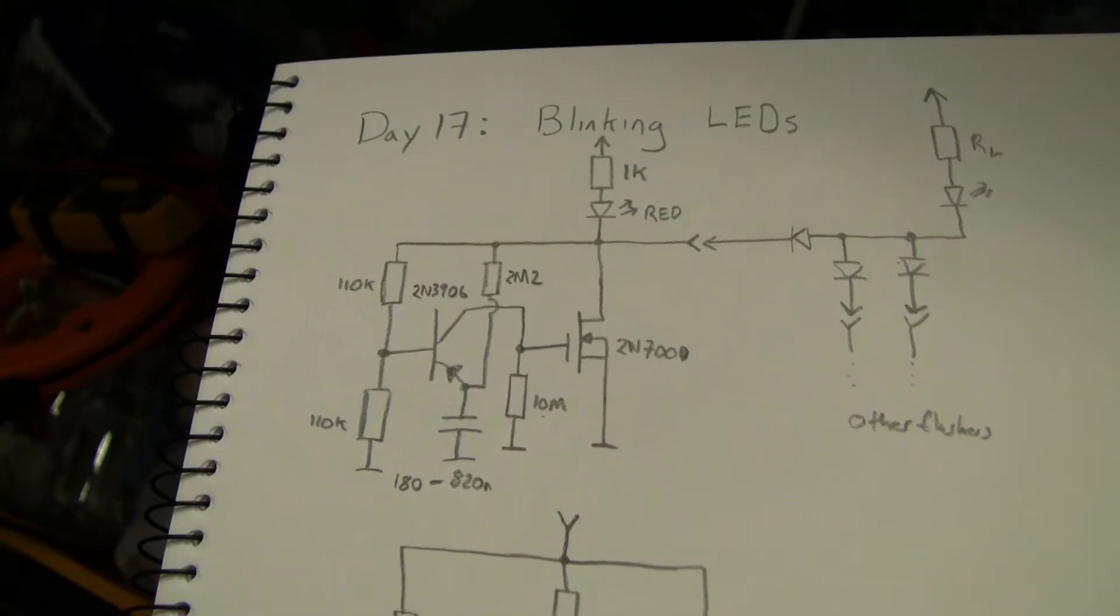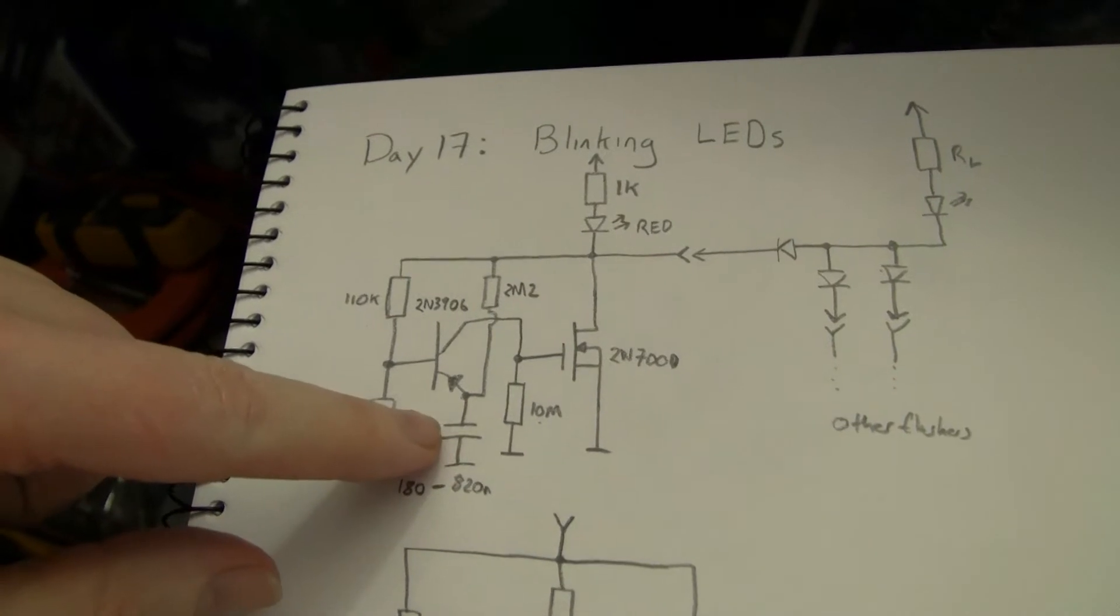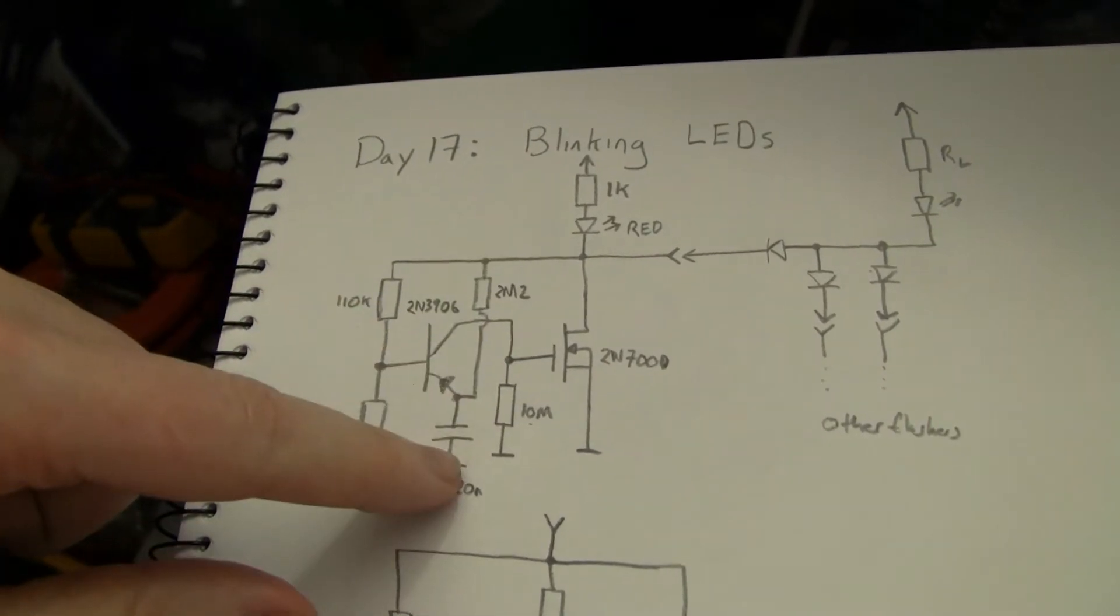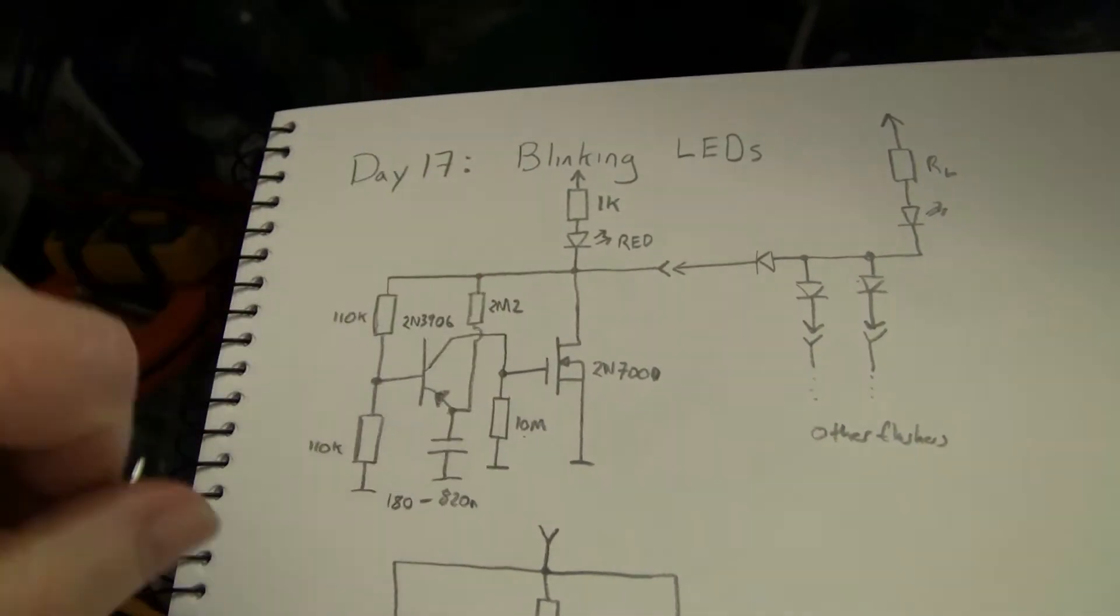Some extra things I forgot to talk about. To vary the flashing frequency to taste, you can obviously change the capacitor value. Bigger capacitors take longer to charge up for the same input current. You can decrease the resistor values to make it go faster or increase it to make it go slower.